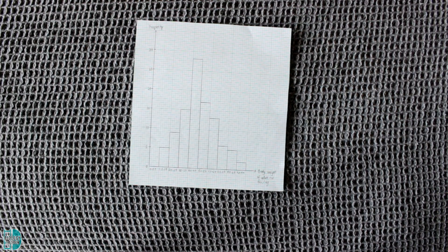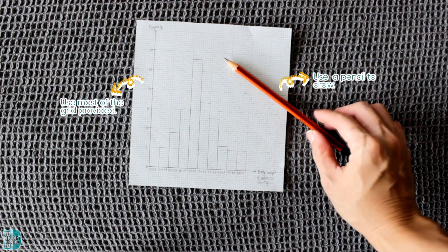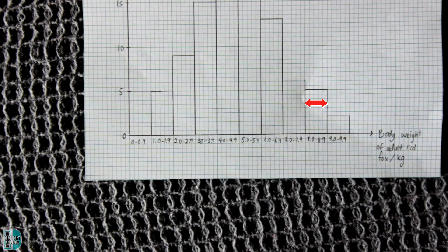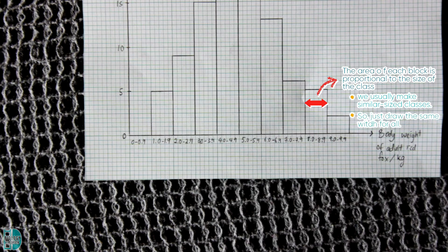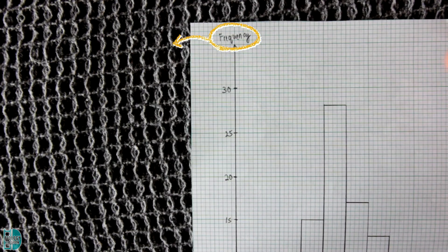The rules when drawing a histogram are very similar to those of a bar chart. Use most of the grid provided so the histogram is not too small, and use a pencil to draw it, not a pen. The x-axis represents the independent variable and is continuous — it should be labelled clearly with an appropriate scale. Unlike a bar chart, the blocks should be drawn touching. Since we usually make equal-size classes, the widths of the blocks are always the same. The blocks should be labelled clearly — for example, 3.0 to 3.9, meaning 3 is included in this class but 4.0 is not. The y-axis represents the frequency and should be properly scaled with equidistant intervals.